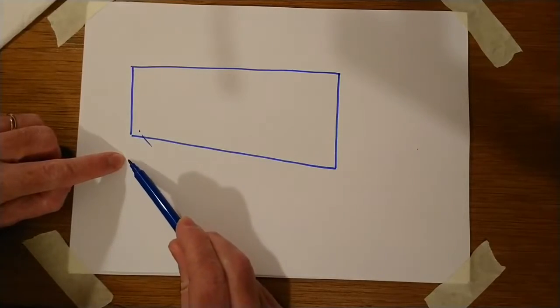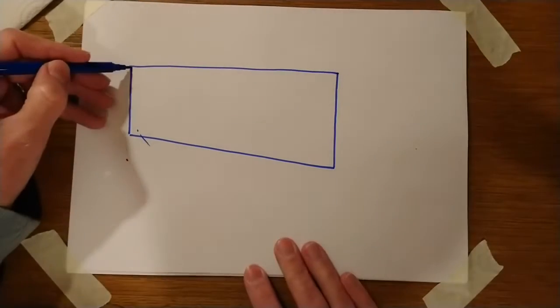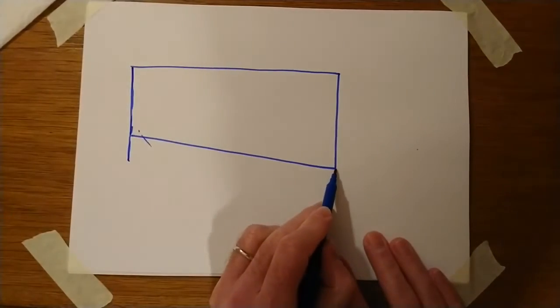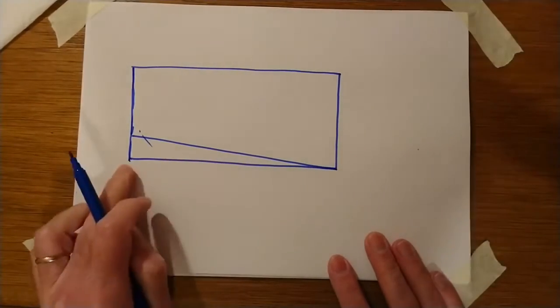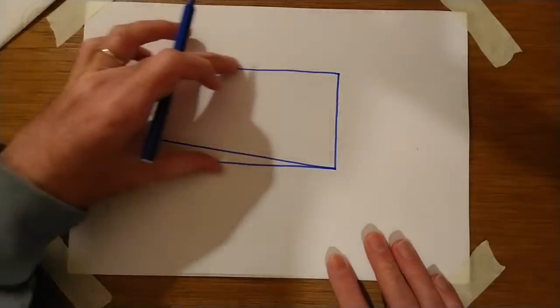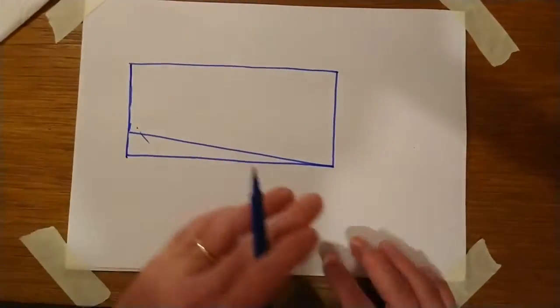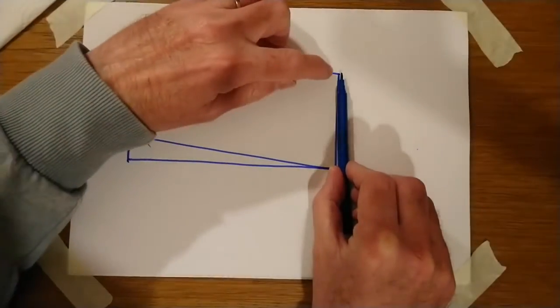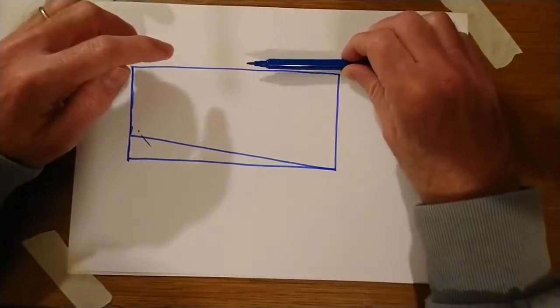And then just put a little dot there. Okay, so now we can extend that left hand side down to there, join up with the new position, and we've got a much better rectangle. And we can use that same technique to create a square.